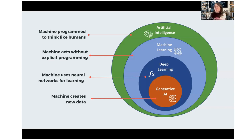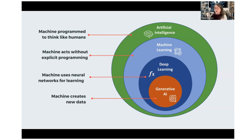Deep learning utilizes complex neural networks — you may have heard that term — to make decisions, acting much like the human brain to understand data. The smallest circle, where we're focused today, is generative AI. At this level, picture a dog trained to bring you specific types of mail based on your mood. Generative AI similarly can create new, contextually relevant data. Each stage represents an advancement from basic programming to complex, nuanced decision-making.